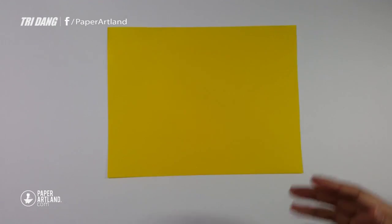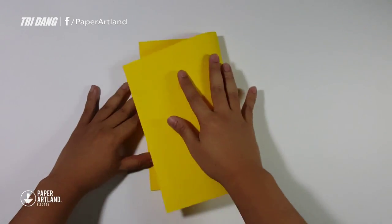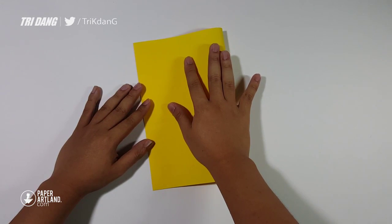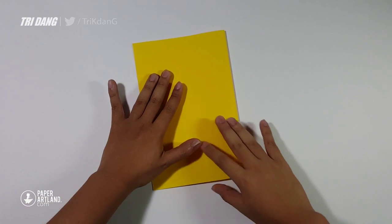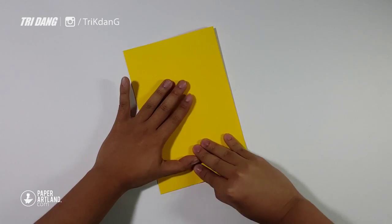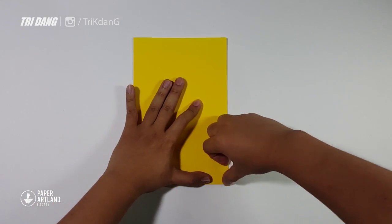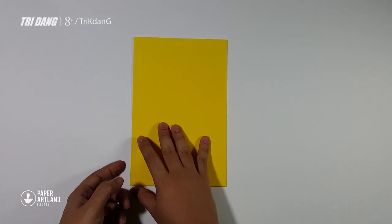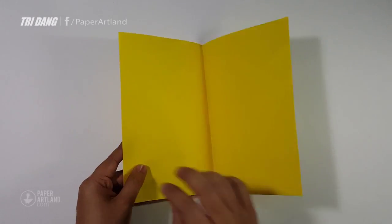And now, let's start. First of all, let me fold the paper in half this way. Make a very nice crease here. And next, unfold the paper.